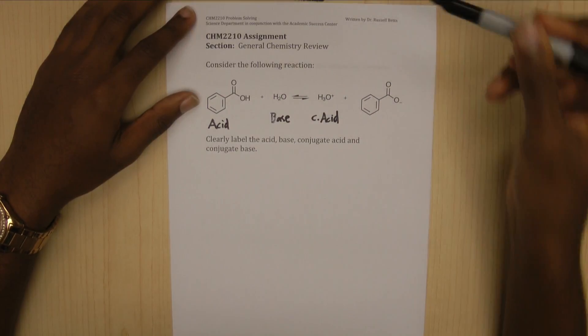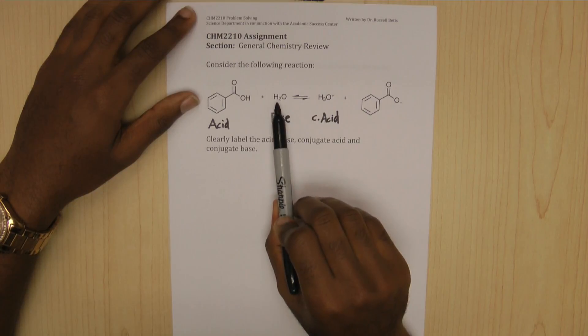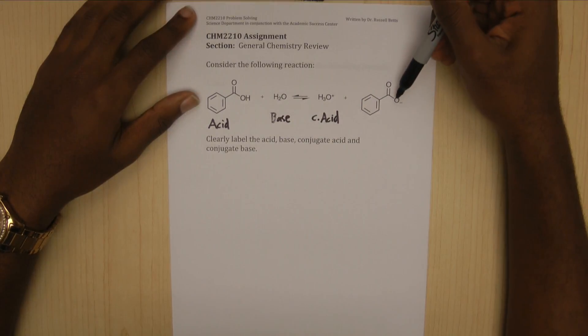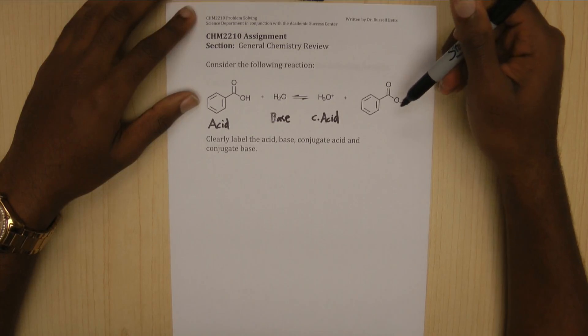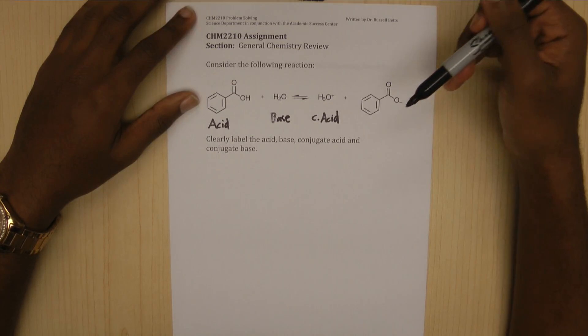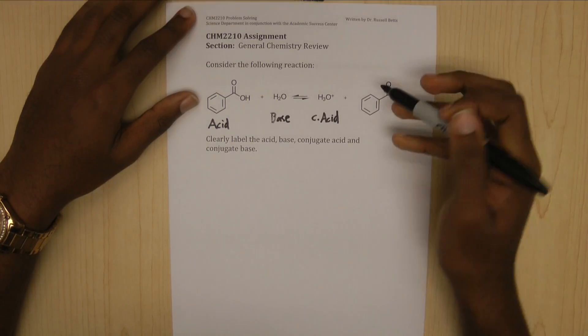And now, this molecule, this molecule now lost its H plus ion because it gave it to water. So therefore, this resulting molecule, its oxygen is negative. So because it's negative, it likes protons. So this would be accepting protons. So for that reason, this is the conjugate base.